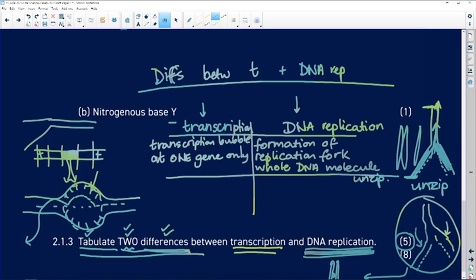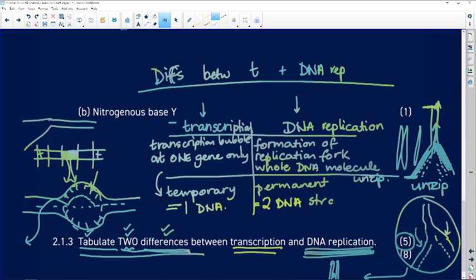So, transcription is only going to be temporary. And once that bubble closes, it's over. And it's still going to be one DNA. Whereas in DNA replication, it's permanent. Once we've opened up that DNA strand and made a copy of it, we're going to have two DNA strands.